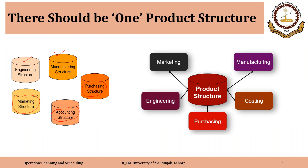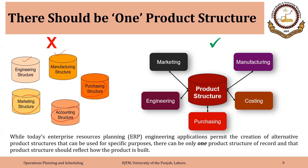There should be a single agreed-upon definition of product structure used by all relevant departments — engineering, purchasing, costing, manufacturing, marketing — each in different ways. While today's ERP and engineering applications permit the creation of alternative product structures for specific purposes, there can be only one product structure of record, and that product structure should reflect how the product is built.